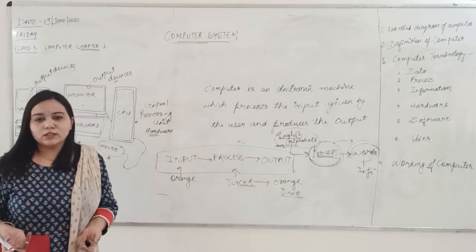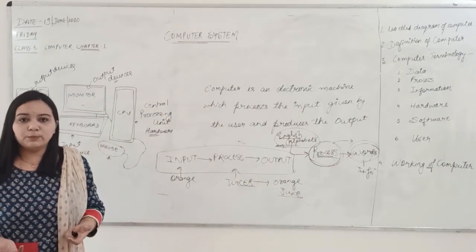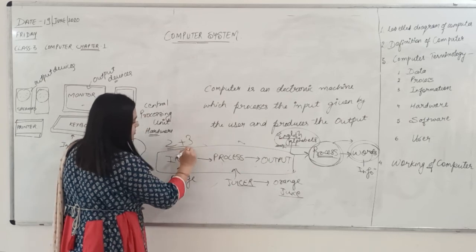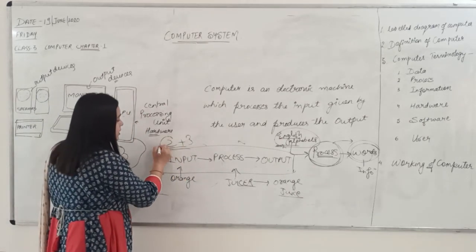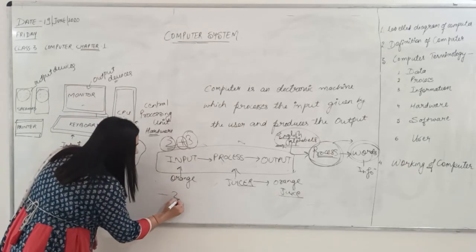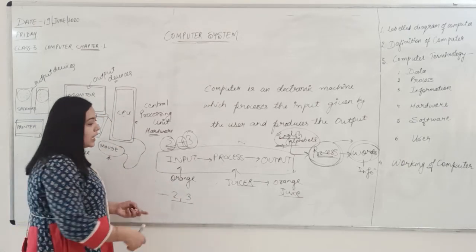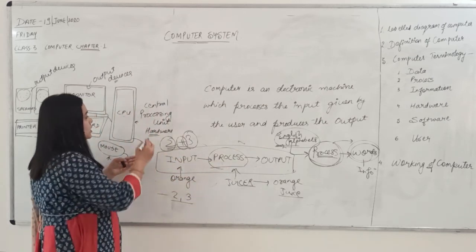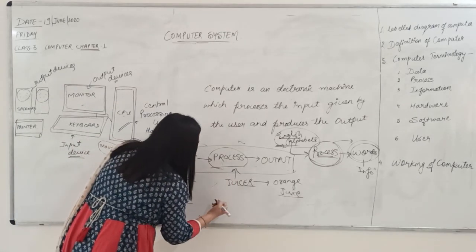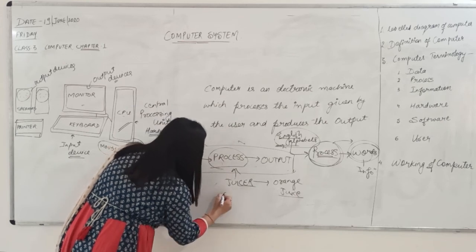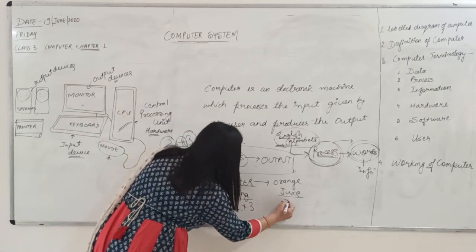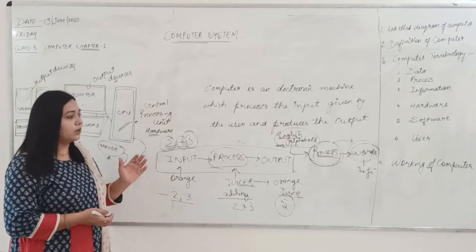In the same manner, a computer works. For example, you want to add two plus three. The numbers two and three along with the addition operator are given as input. In the case of a computer, the processor is the CPU. The CPU is responsible for carrying out this mathematical operation — it will do the process of adding these two numbers, and then you will get the result five, which is the output. This is how a computer works.